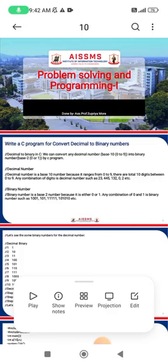There are total 10 digits between 0 to 9. Any combination of digits is a decimal number, such as 23, 445, 132, 02, etc. Now, a binary number is base 2 because it is either 0 or 1.